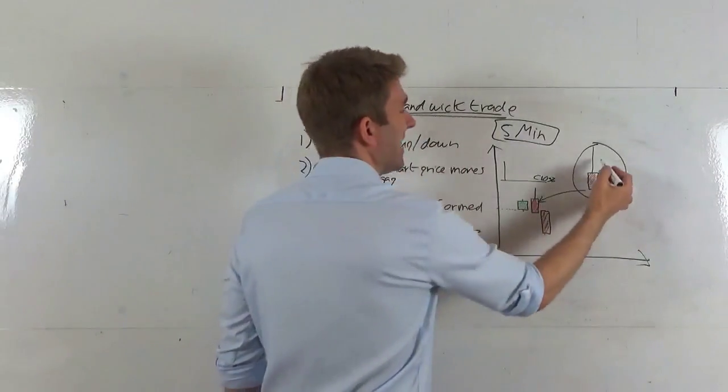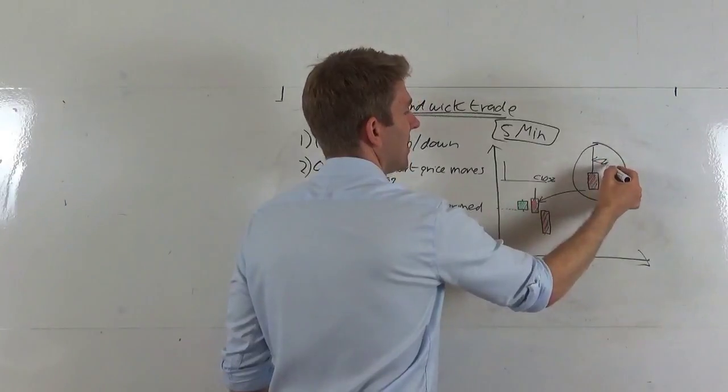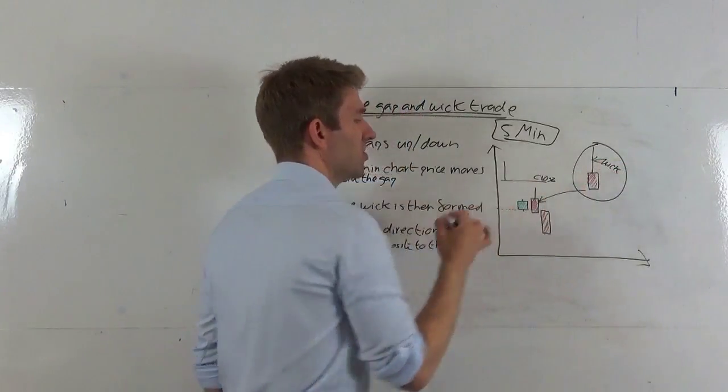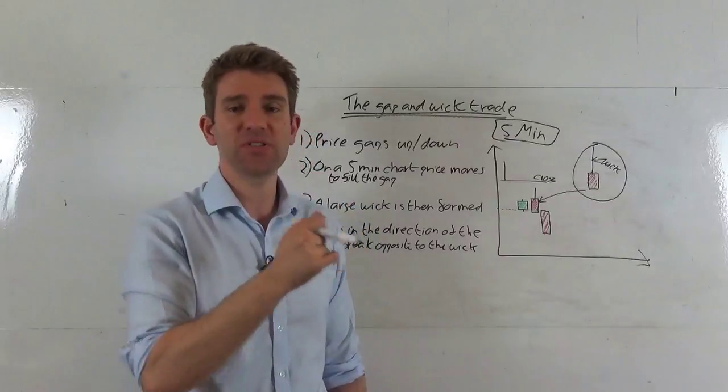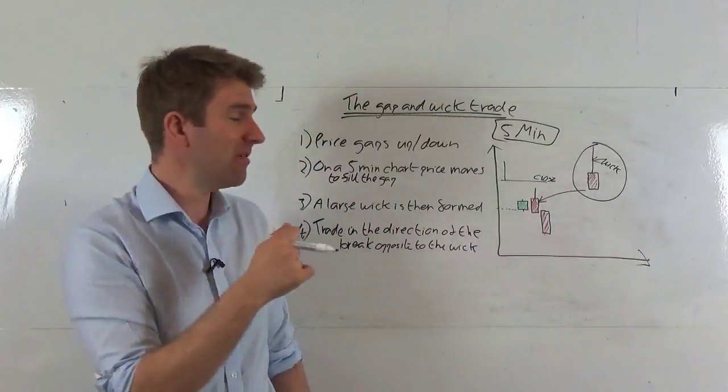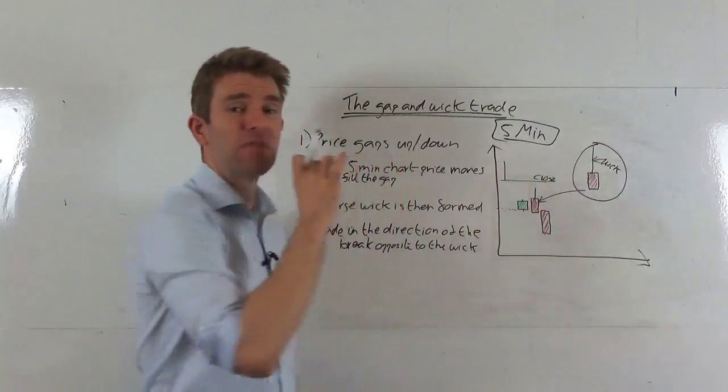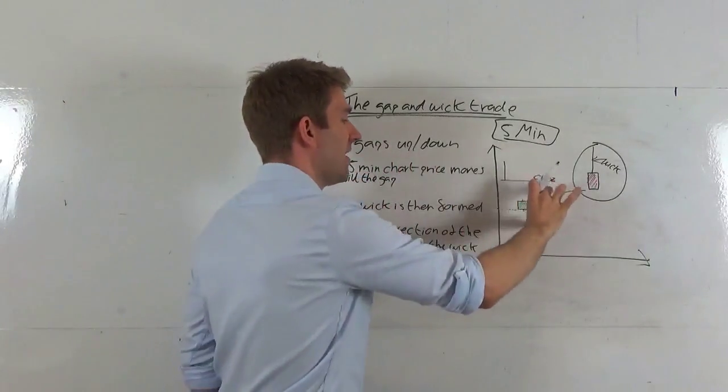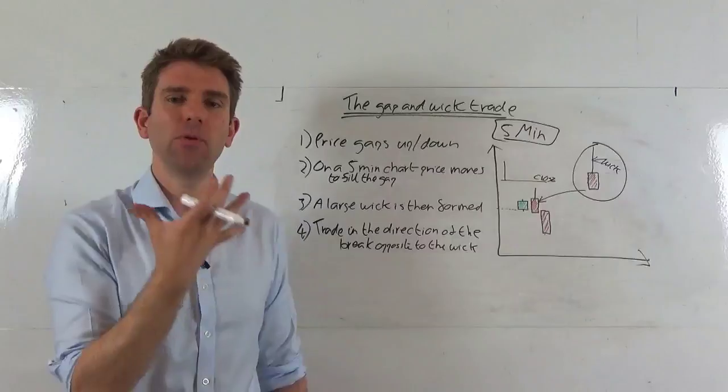But the most important feature of the candlestick that we're looking for is this puppy right here, guys, this wick to the upside. Because that is a five-minute candle showing us that there's a significant change in sentiment in that five-minute period. And the longer that candle, the better. The bigger range on that candle, the better.